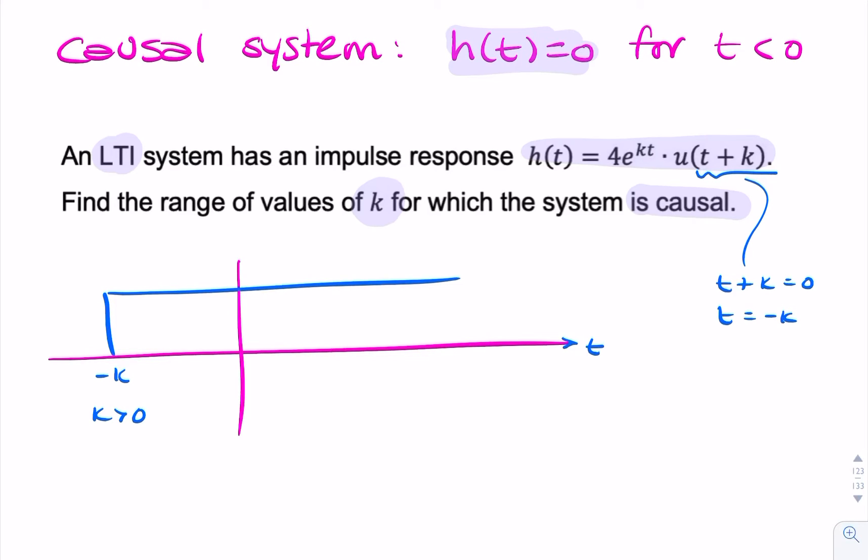Another way of looking at it is this is a unit step that's shifted k seconds to the left, k being positive. So the important thing here is that k is positive. So, if k was positive, that's what it would look like.